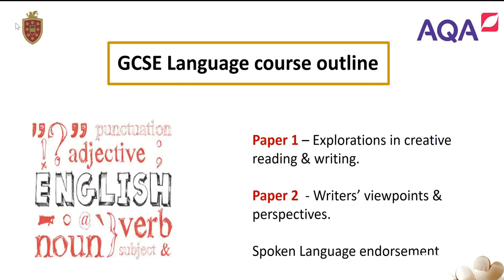The GCSE language course outline again consists of two papers. Paper 1 is Explorations in Creative Reading and Writing, and Paper 2 is Writer's Viewpoints and Perspectives. As well as this, you will also do a spoken language endorsement, where you will produce a short presentation and present it to a small audience.